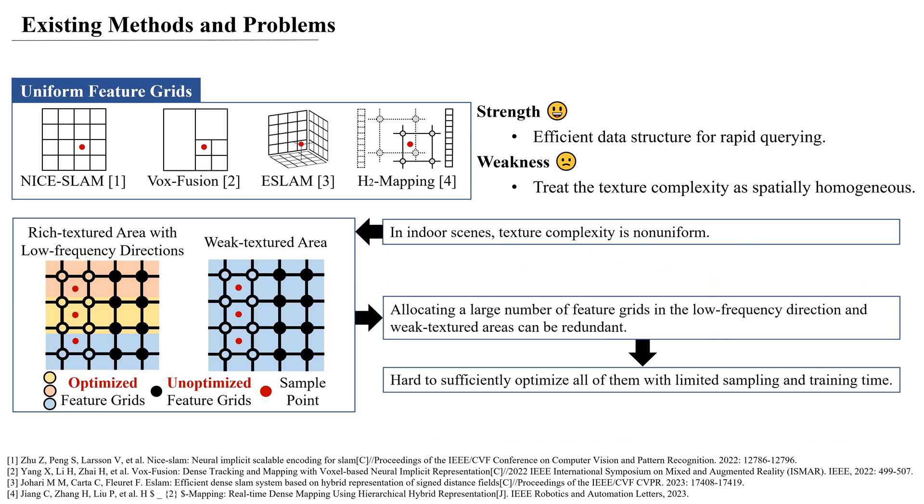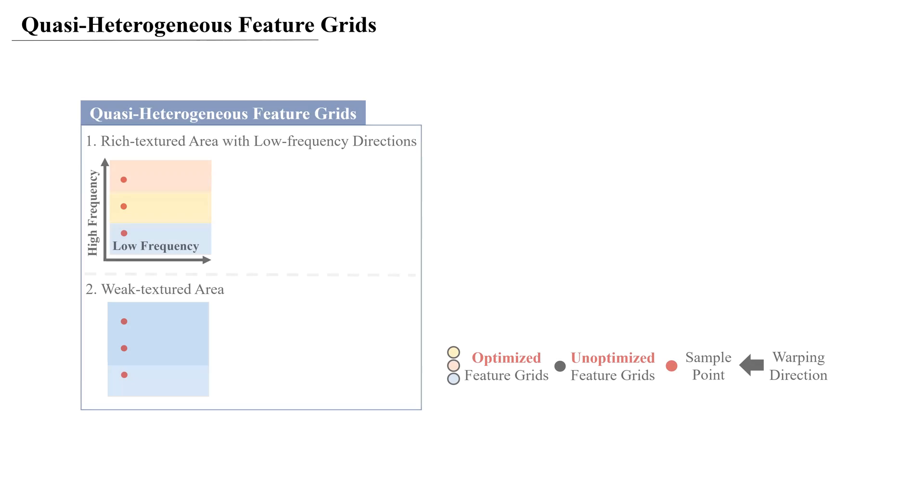Therefore, allocating a large number of feature grids in the low-frequency direction and weak-textured areas can be redundant. This is because optimization updates only propagate to grids where samples are located, making it hard to sufficiently optimize all of them with limited sampling and training time in online mapping tasks.